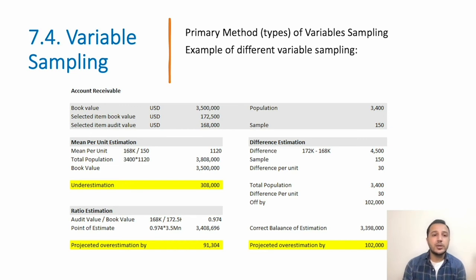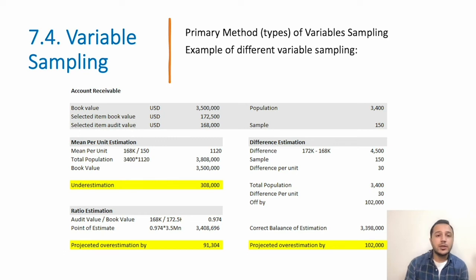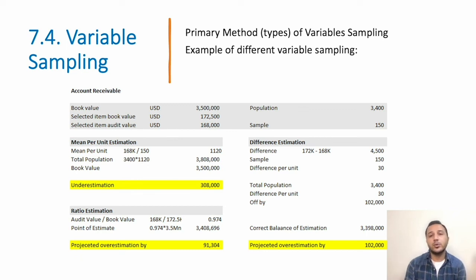The third method is ratio estimation. The actual audited value was $168,000 whereas management booked $172,000, which is approximately 97%. We discount the overall value by 97%, giving a total accounts receivable of approximately $3.4 million. However, management recorded $3.5 million, representing an overestimation of $91,000.